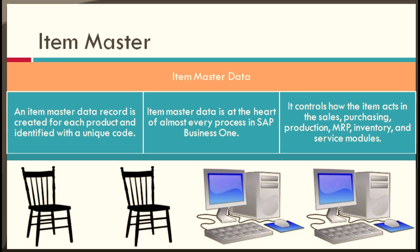You would create an item master for a product at the level of a universal product code or a catalog number. The item master data is at the heart of almost every process in SAP Business One — it controls how the item acts in sales, purchasing, production, MRP, inventory, and service modules.